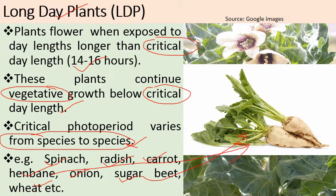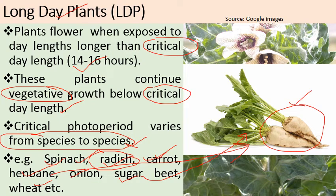We grow radish, spinach, and carrot under short day conditions because we require only the vegetative portion of the plant. Since these are long day plants, keeping them under short day conditions prevents flowering and promotes vegetative growth, which is the part exploited by humans.